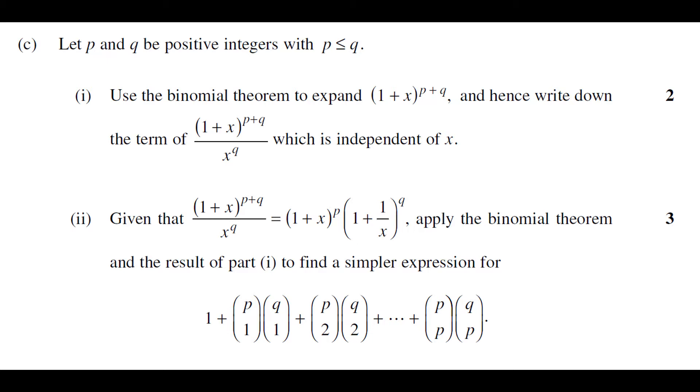The setup to the question is we're told to let p and q be positive integers with p less than or equal to q. For part 1, we're told to use the binomial theorem to expand (1+x) to the p plus q, and hence write down the term of (1+x)^(p+q) over x^q which is independent of x.